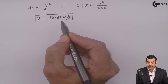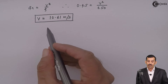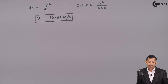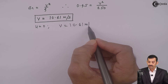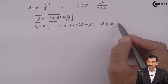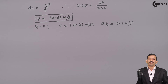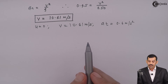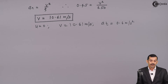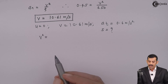So the particle starts from rest, and when it attains a resultant acceleration of 0.75 meters per second square, the velocity it reaches is 10.61 meters per second. Since the tangential component of acceleration is responsible for change in the magnitude of velocity, we can use the kinematic relation between u, v, and S to find the distance traveled.